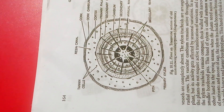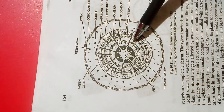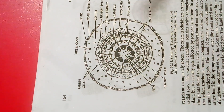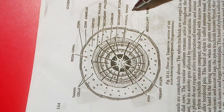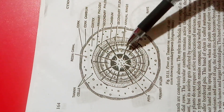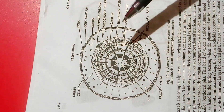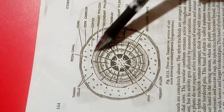Thus, two bands of secondary xylem — the autumn wood and the spring wood — are produced in one year, and together they make up the annual rings. The annual rings of Pinus are very distinct, and one can easily determine the age of a plant by counting these rings, since one pair is produced every year.